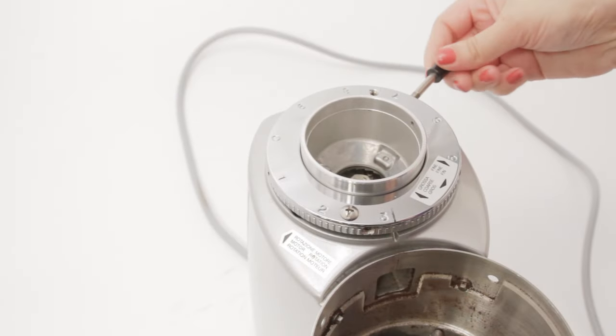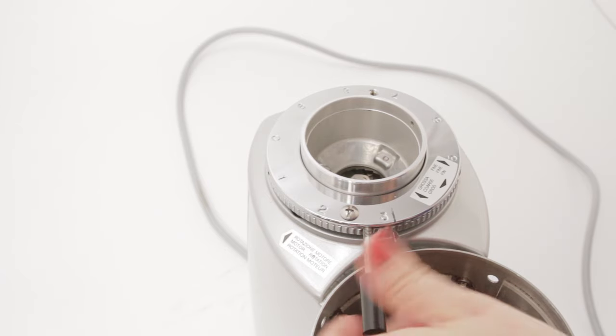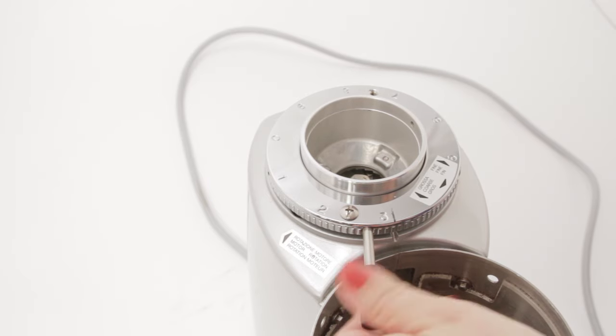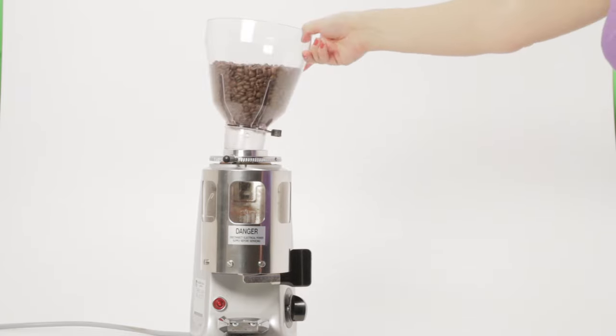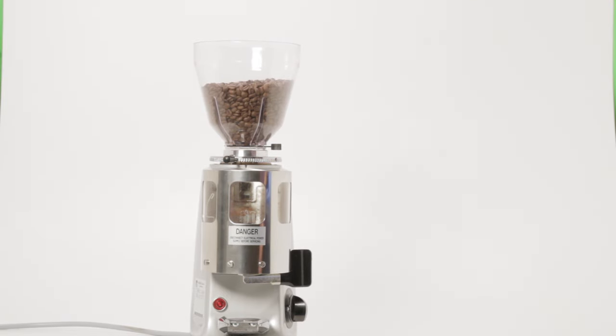If your grinder has an adjustment handle, you may want to unscrew it and move it to a more convenient hole. That's it. Your grinder is calibrated. Replace your hopper, add beans, and enjoy.